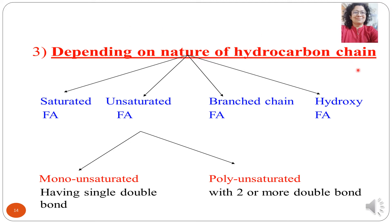Depending on the nature of hydrocarbon chains, fatty acids can be saturated, unsaturated, branch chain, or hydroxy fatty acids. Unsaturated fatty acids can be further classified as monounsaturated fatty acids, having a single double bond, whereas polyunsaturated fatty acids are defined as fatty acids having two or more double bonds.